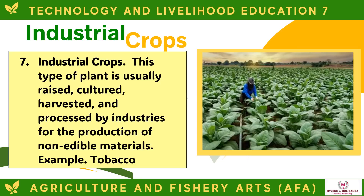Industrial crops are raised, cultured, harvested, and processed by industries for the production of non-edible materials. An example is tobacco.